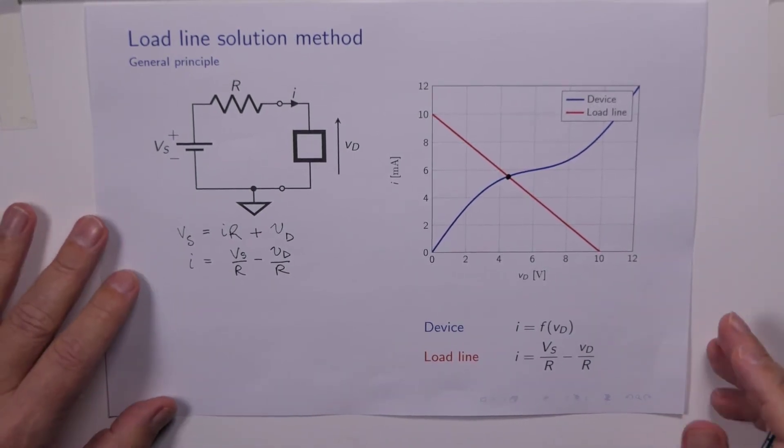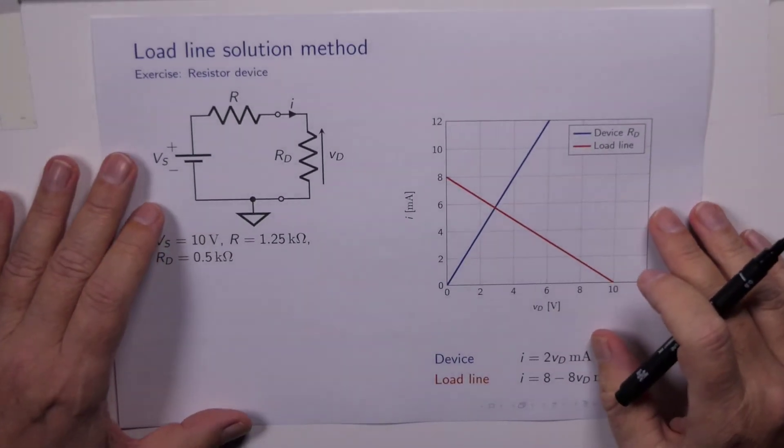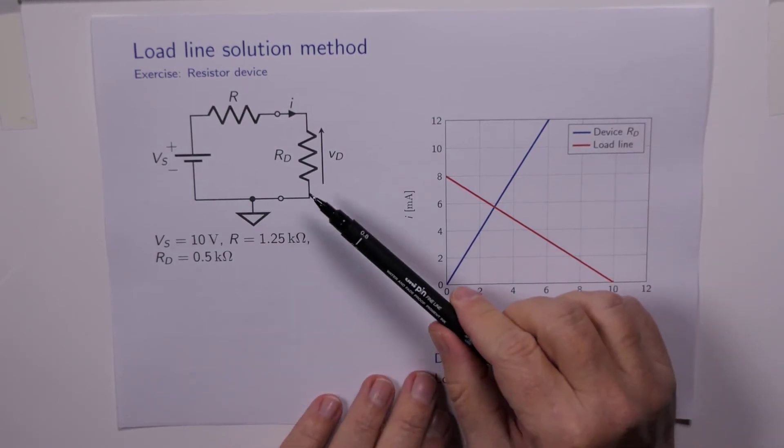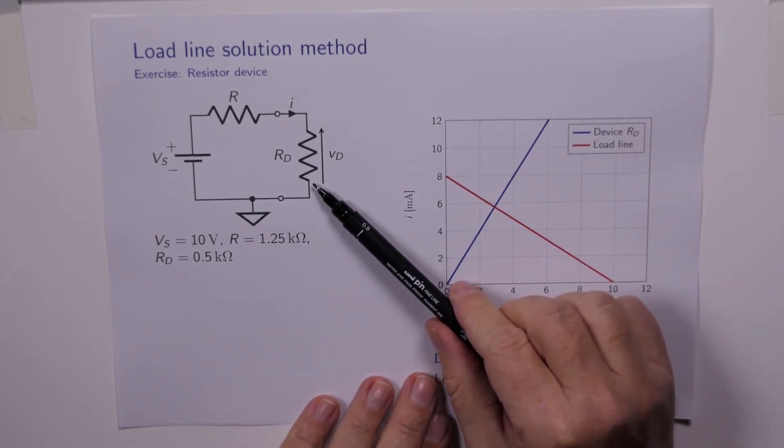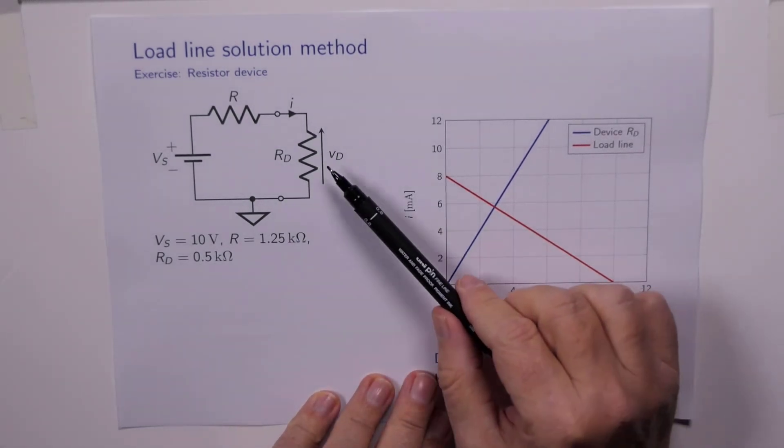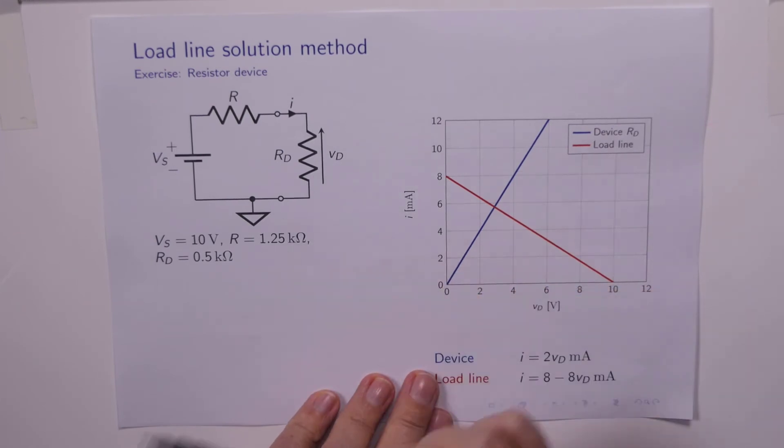So let's have a look at a couple of examples. Here's a very simple example where instead of having some clever and exotic component for our device, we've just got another resistor.